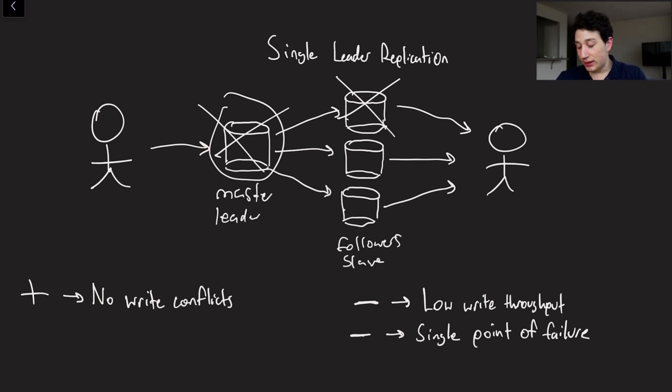And of course, in addition to that, by virtue of also having one single leader, we have low write throughput. In general, if we're all writing to the same node, it means that all the writes have to go through one single bottleneck.